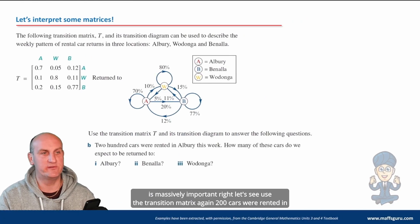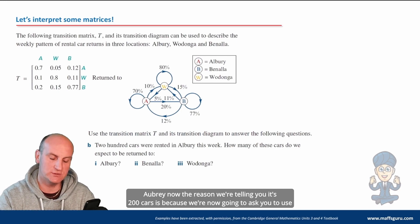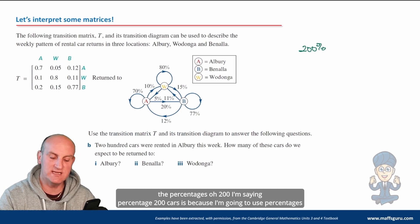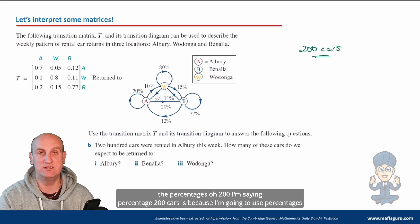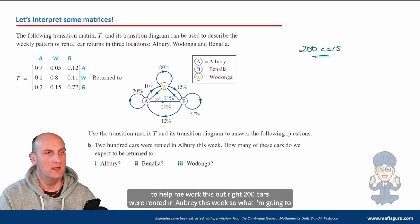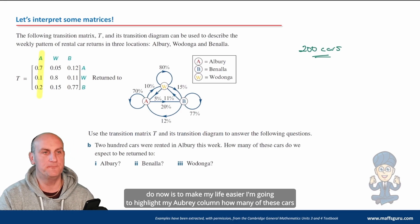Let's use the transition matrix again. 200 cars were rented in Aubrey this week. The reason we're given 200 cars is because we're going to use the percentages to help work this out. So what I'm going to do now is highlight my Aubrey column to make life easier.